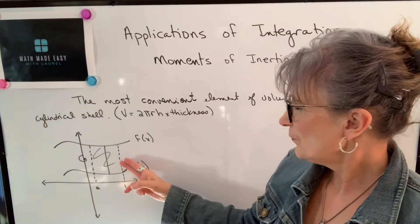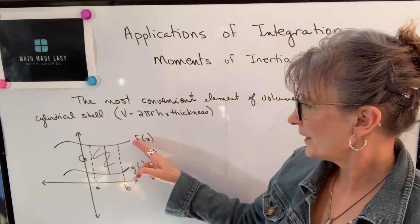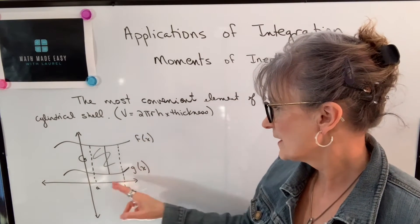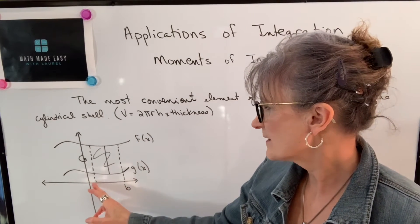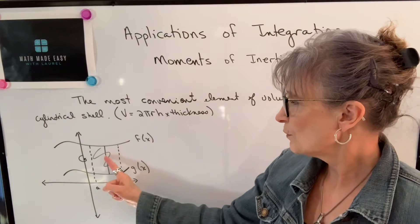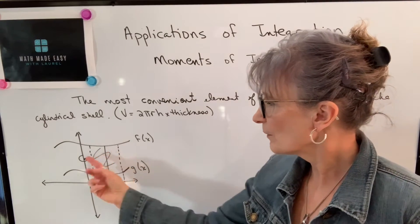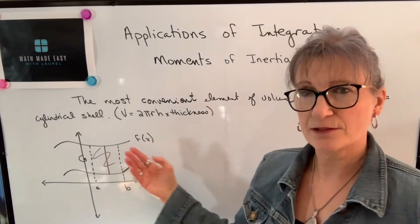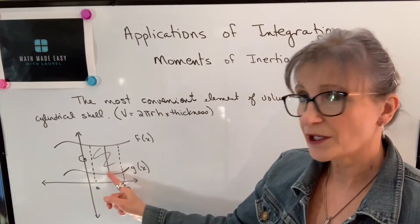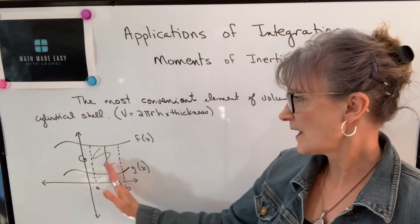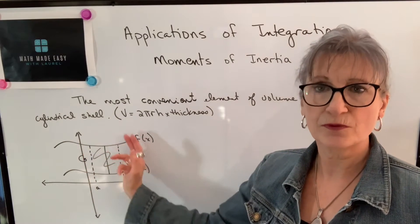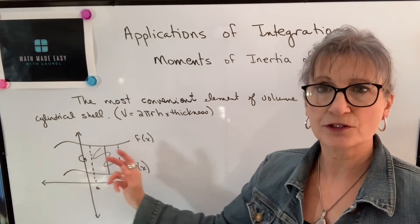So if we take the area bounded by top curve f of x, bottom curve g of x, from x equals a to x equals b, and if we were to rotate that area around the y-axis, it would form a solid. Notice I'm going to be working with vertical rectangles, and that's parallel to the axis of rotation, so that means I have to use the shell method.